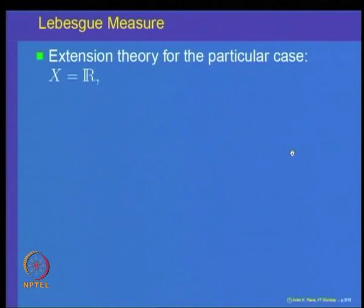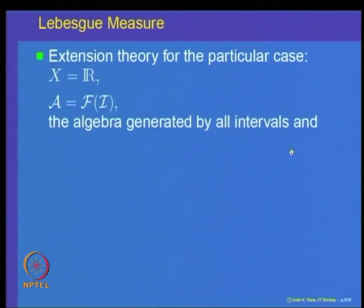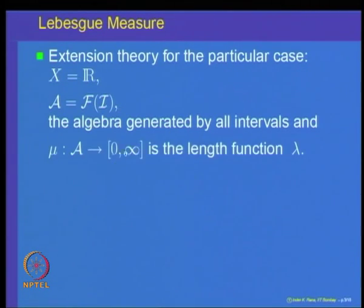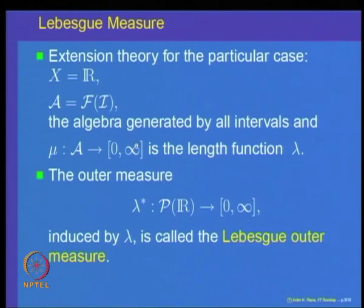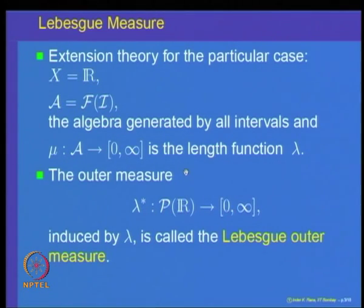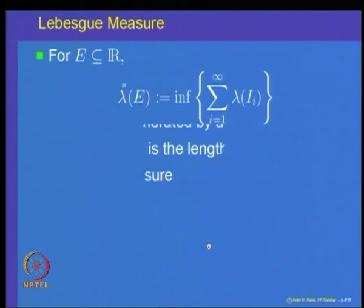For the extension theory, we apply it for the case where X is the real line. The algebra A is the algebra generated by all intervals in the real line, and mu on this algebra is the length function. We have seen that the length function on the algebra generated by all intervals is a countably additive set function. The outer measure induced by this length function, denoted by lambda star, is defined on all subsets of the real line and is called the Lebesgue outer measure.